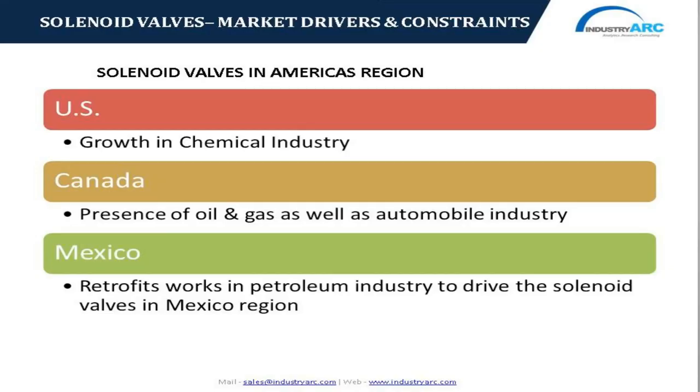Canada is one of the largest producers of oil and gas globally, ranking fifth in production and fourth in exports. Even though the oil and gas industry faced a slump in past years, demand remains stable as long as automobiles operate on oil. The Canadian Association of Petroleum Producers regulates the adoption of solenoid valves in the gas and petroleum sector. In Mexico, the petroleum industry is a key economic driver, and retrofit works in petrochemical industries are the major factor driving the solenoid valves market in this region.